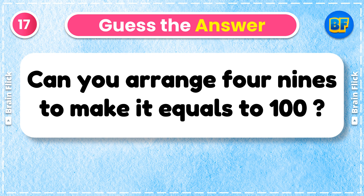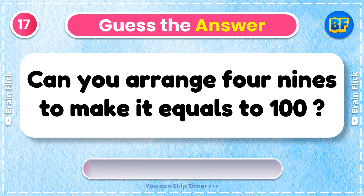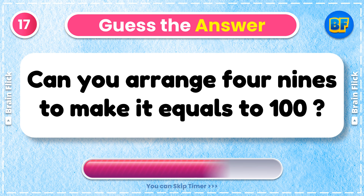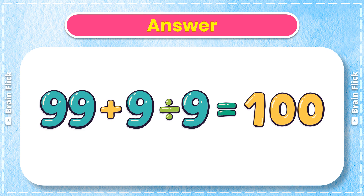Riddle 17. Can you arrange 4 nines to make it equal to 100? Answer: 99 + 9 ÷ 9 = 100.